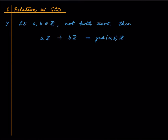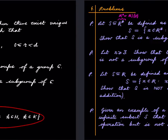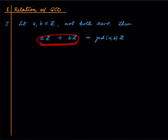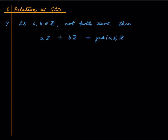Now let us make some number-theoretic connections — connecting these notions of groups with the notion of GCD. Pick any two integers a and b, not both zero. Then aℤ + bℤ is a subgroup — ℤ is after all an abelian group, so adding two subgroups gives a subgroup. By the previous theorem, this equals dℤ for some d. We claim that d is actually gcd(a, b).